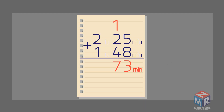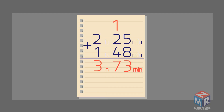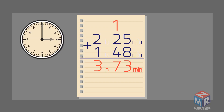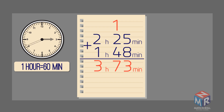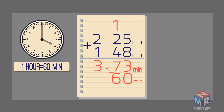Now we need to add the hours column. 2 plus 1 equals 3 hours, so we have 3 hours and 73 minutes. Keep in mind that 1 hour is equal to 60 minutes. We need to take away 60 minutes from 73 minutes and give it to the hours. That gives us 4 hours and 13 minutes.